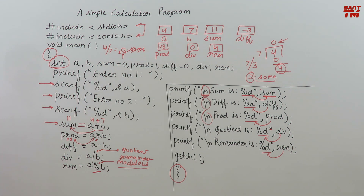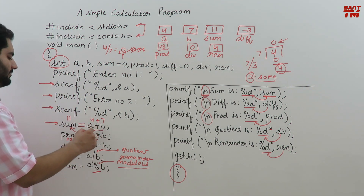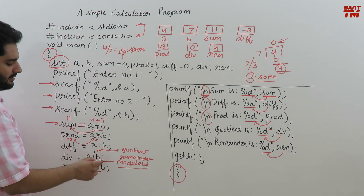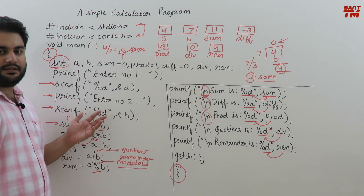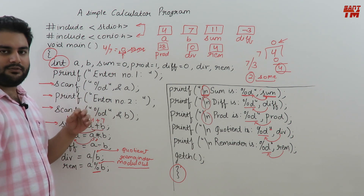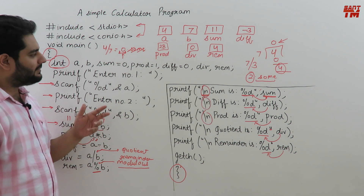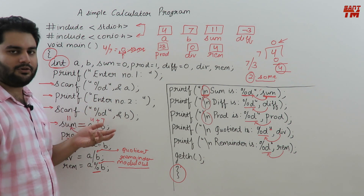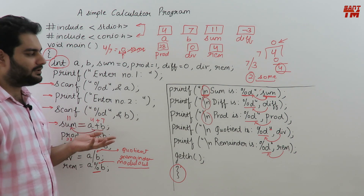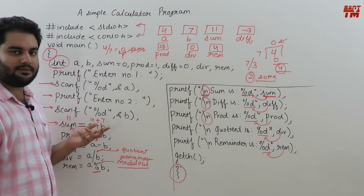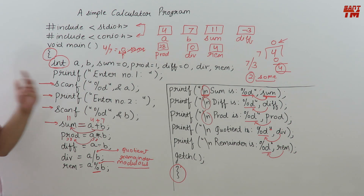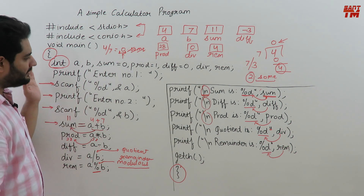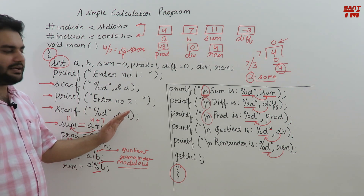That was all about the program. My main motive was to explain these operators: plus, star, minus, divide, and percentage. I will carry forward with the topic of operators — in the video on tokens in C I mentioned we would cover operators later, and now the time has come to explain how many types of operators exist in C programming and how each works. Please run this program on your PC to get your concepts more clear.